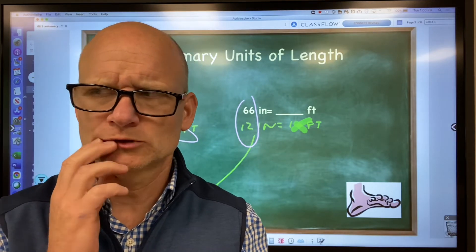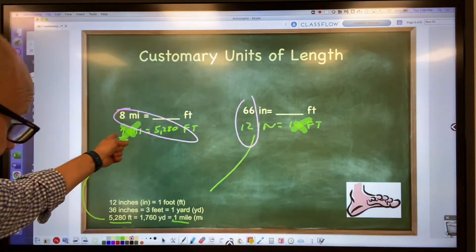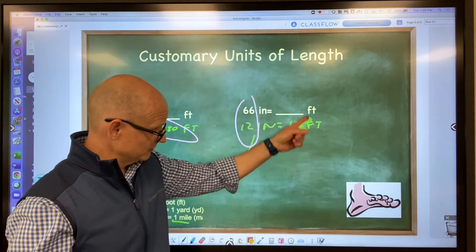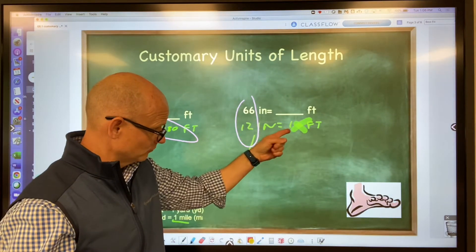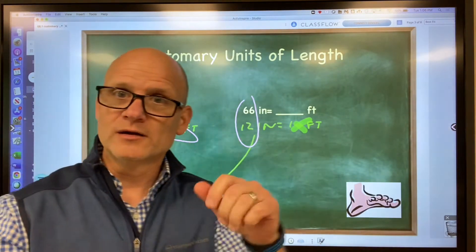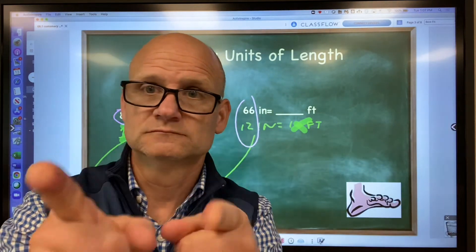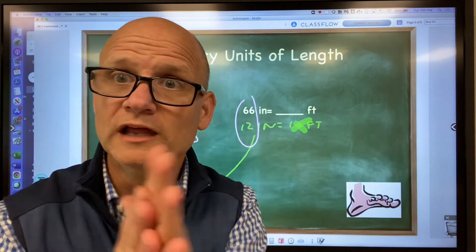But if you're that student that doesn't really know whether to multiply or divide, then write the unit under the unit. What did I do? I wrote inches under inches, feet under feet. I made the statement true, 12 to 1. If it's number over number, divide. If it's cross, multiply.